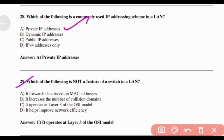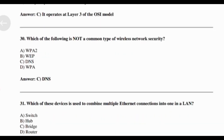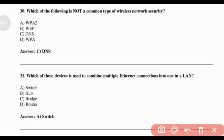Which of the following is NOT a feature of a switch in a LAN? Answer: Option C — It operates at Layer 3 of the OSI model. Which of the following is NOT a common type of wireless network security? Answer: Option C — DNS.